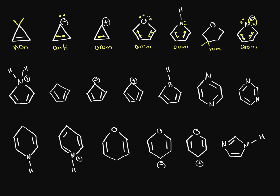With this one we have a nitrogen with a positive charge and it might look like it's sp3, but remember there's a resonance structure where the double bond can move and we get a carbocation. So it is sp2 hybridized, and every other atom is too. But we only have 1, 2, 3, 4 pi electrons, and this follows the 4n rule, so this is anti-aromatic.